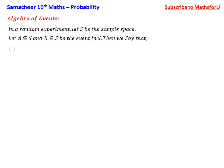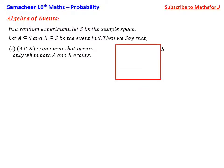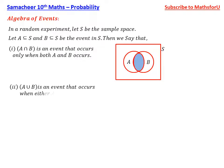A intersection B is an event that occurs only when both A and B occur. So A and B are two events and A intersection B represents their common event. A union B is an event that occurs when either A or B occurs.